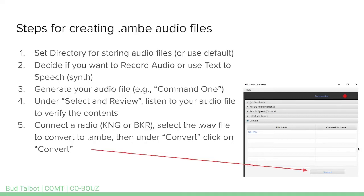So it's a process of creating the WAV file on the computer, letting your radio convert it to AMBE, and then it gets written back to that directory as an AMBE file. You'll end up with both the WAV version and the AMBE version in that directory.